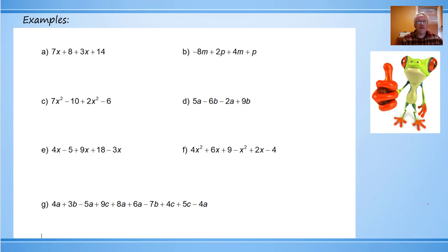So take a look at this first example A here. We look at the kind of terms we have. I see we have terms with X's. Those are like terms and I see we have constant terms. So sometimes we have students underline these with different colors. I use one underline mark to underline the X ones and two underline marks to mark the constants, the numbers.